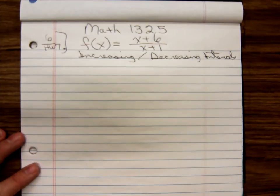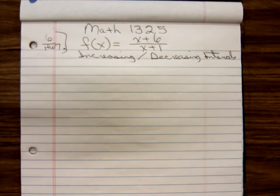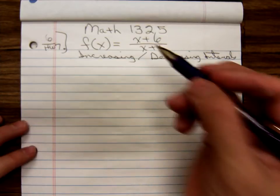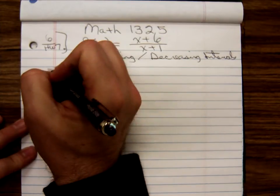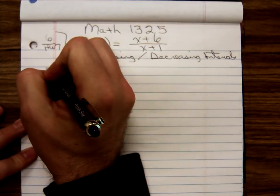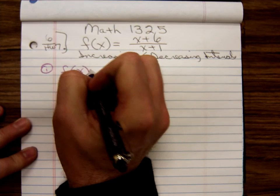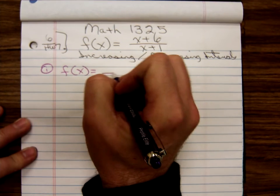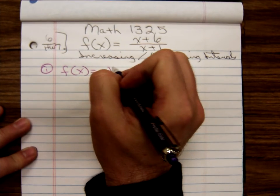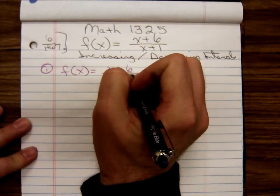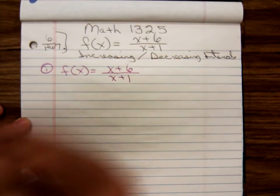We have a sequence of steps. The first thing we have to do is find the derivative. So here's our function: f of x is equal to x plus 6 over x plus 1.